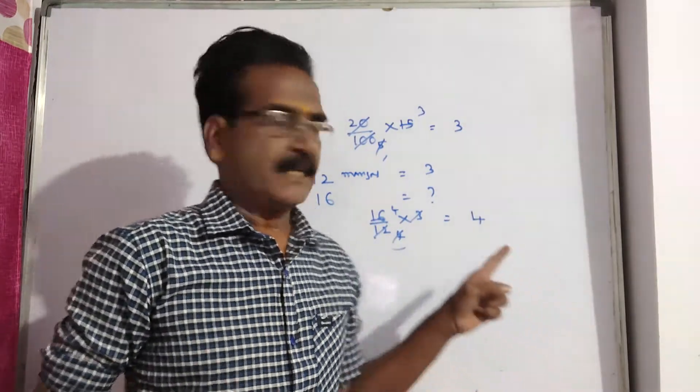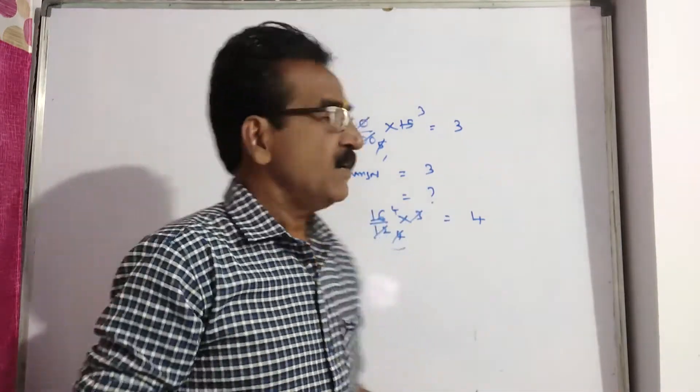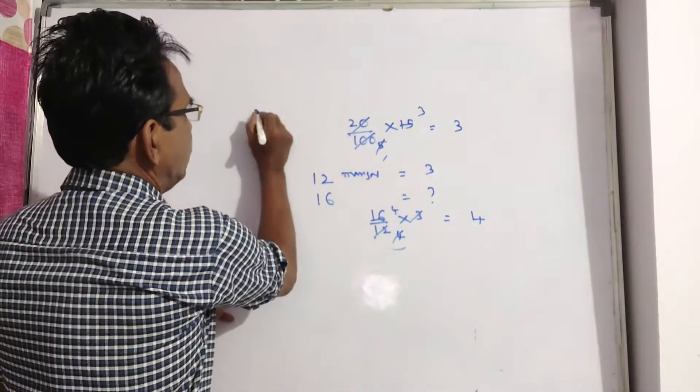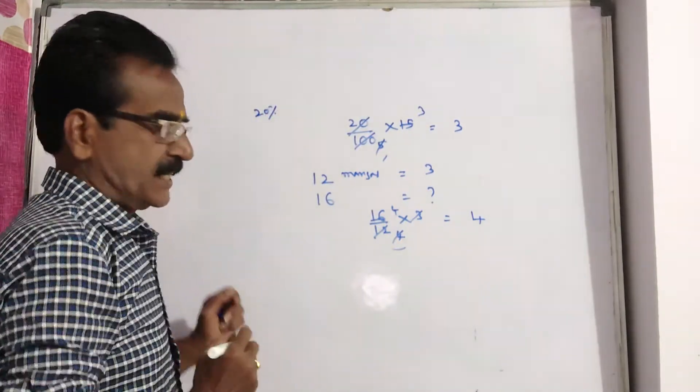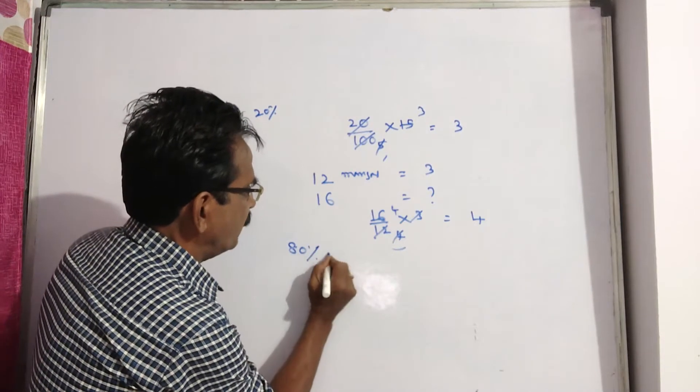We want the price of 16 mangoes before reduction. The reduction is 20 percent. So this 4 rupees is 80 percent of the original price.